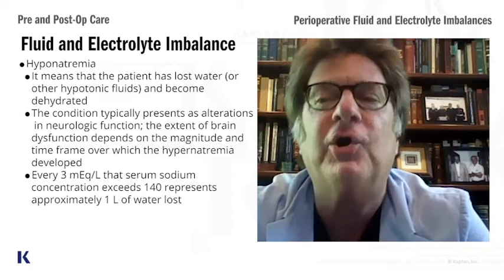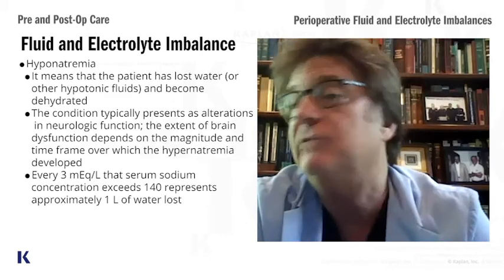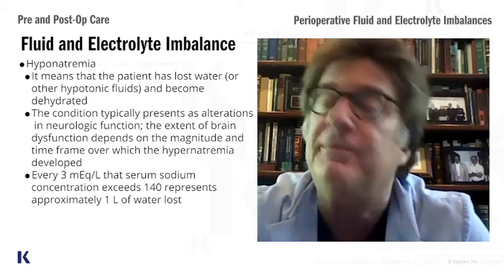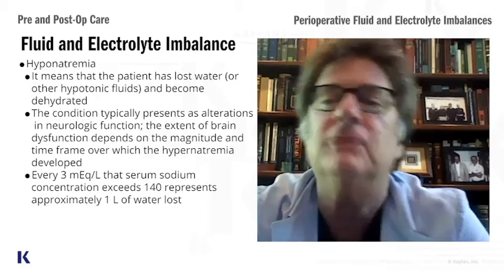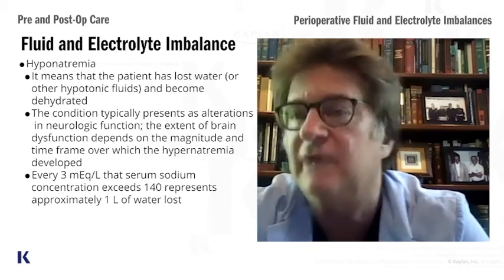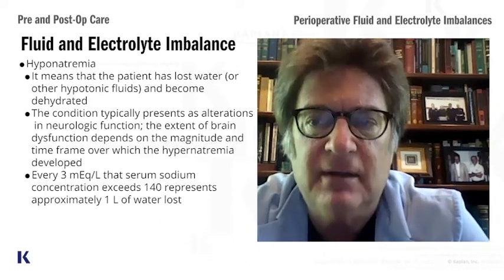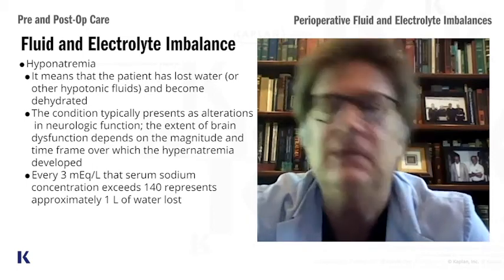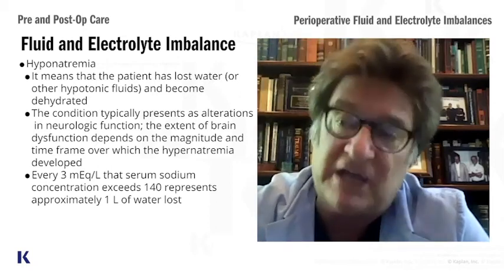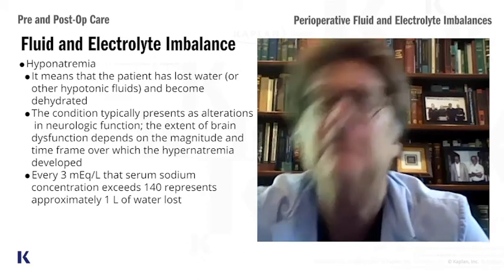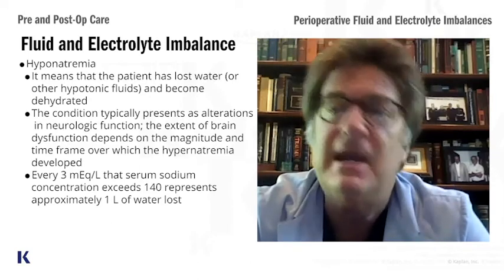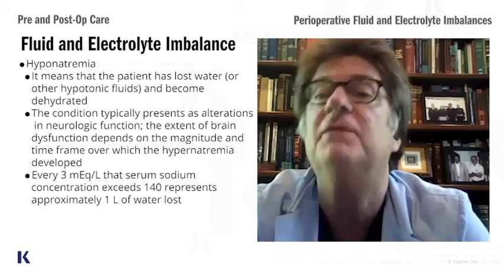Now let's talk about hypernatremia. The most common cause of hypernatremia is dehydration. The second most common cause — not common, but you need to know it for the test and for life — is diabetes insipidus. The treatment of diabetes insipidus is desmopressin or vasopressin. The most common cause remains dehydration, and the treatment of dehydration is rehydration with balanced solutions.